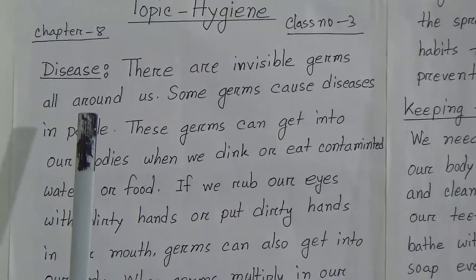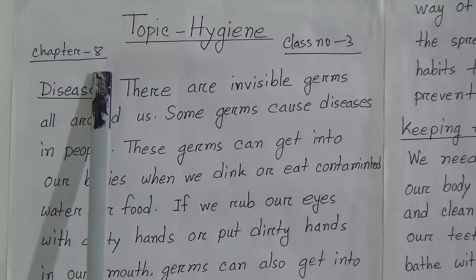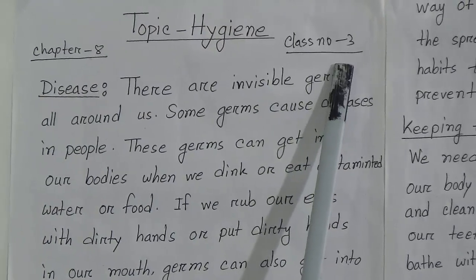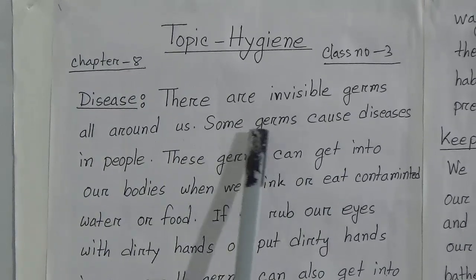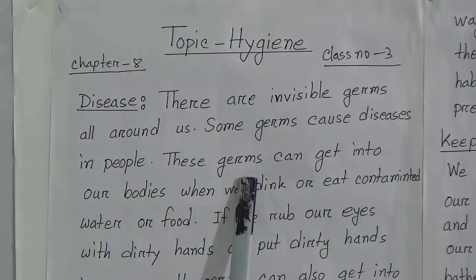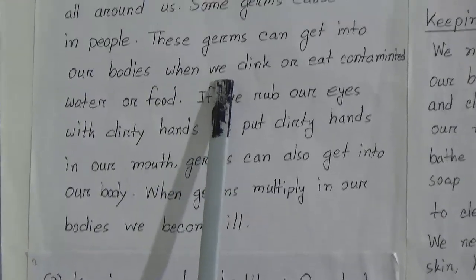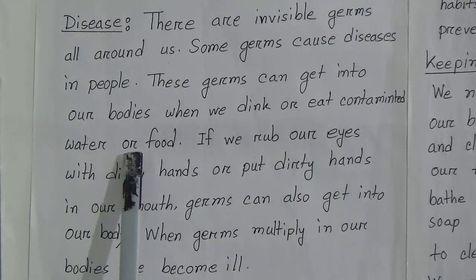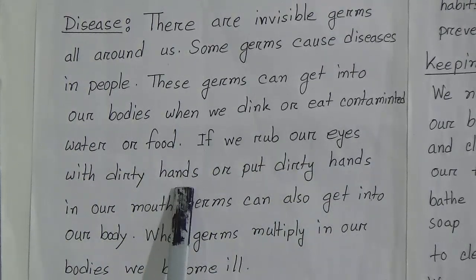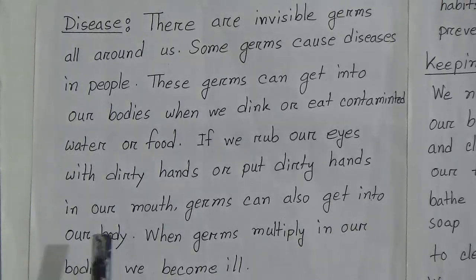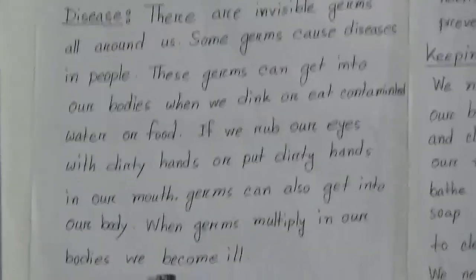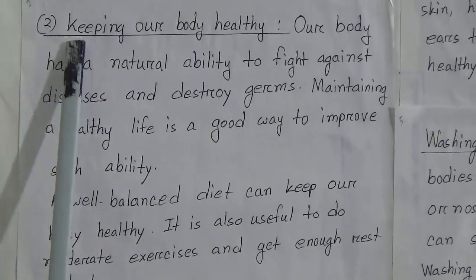Students, first we will read out this chapter and then do some exercises based on it. This is Chapter 8, topic is Hygiene, class 3. There are invisible germs all around us. Some germs cause diseases in people. These germs can get into our bodies when we drink or eat contaminated water or food, if we rub our eyes with dirty hands, or put dirty hands in our mouth. When germs multiply in our bodies, we become ill.